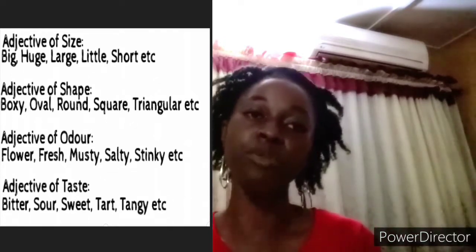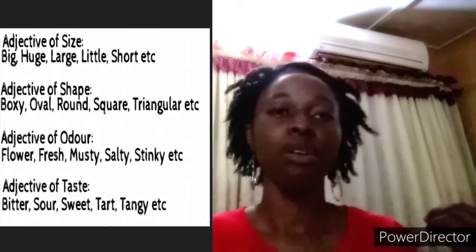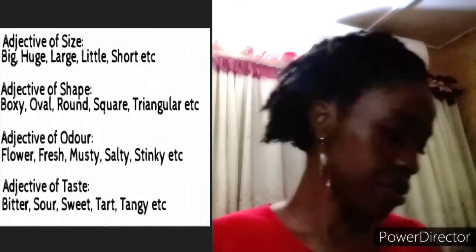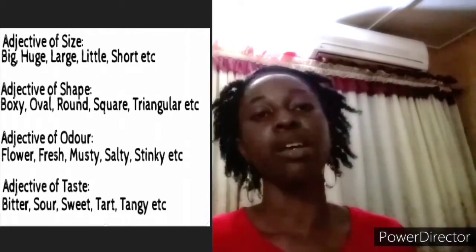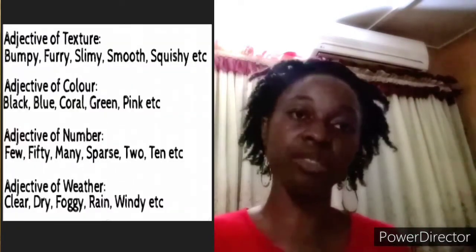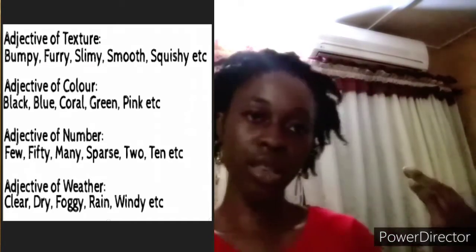We also have adjectives of smell, like stinky, musty, fresh, flowery, and so on. We have adjectives of taste like salty, sweet, bitter, sour, etc. And we have adjectives of texture — for example, smooth, granulated, slimy, squishy, bumpy, and so on and so forth.